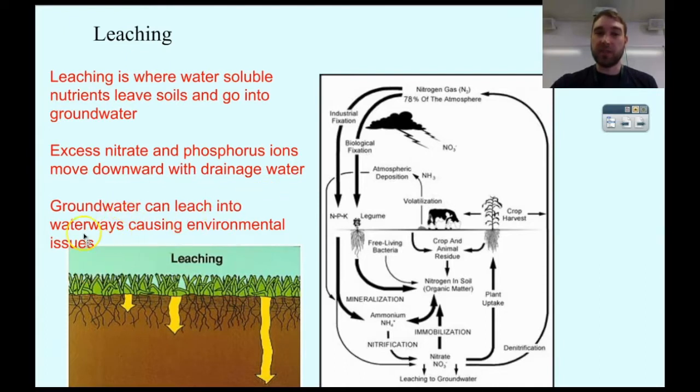So that leaching of those nutrients into waterways leads to eutrophication. Here we can see with the nitrogen cycle, we've got nitrates being produced down here. Those nitrates, if they're not being used by plants, they don't hang around in the soils.